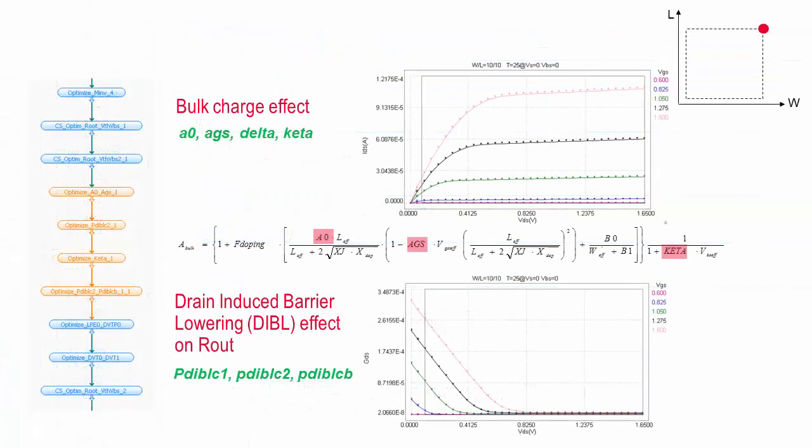From device physics, we know that the depletion region will not be uniform along the channel when a non-zero VDS is applied. This will cause VTH to vary along the channel. This effect is called the bulk charge effect. BSIM4 uses A-bulk to model the bulk charge effect. Several model parameters are introduced to account for the channel length and width dependence and bias effects.